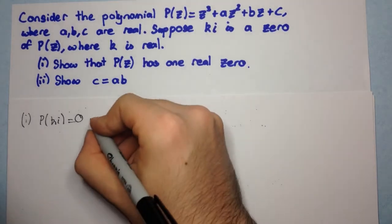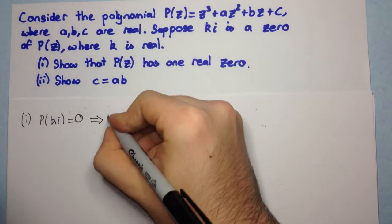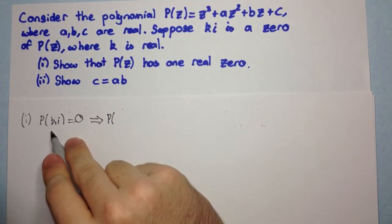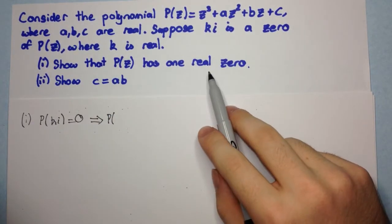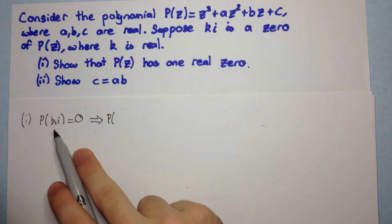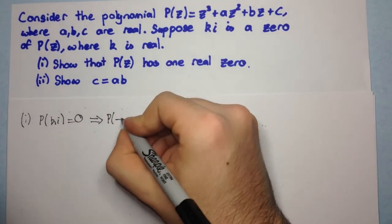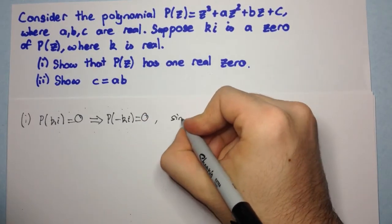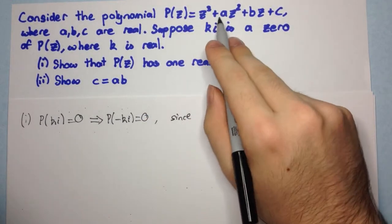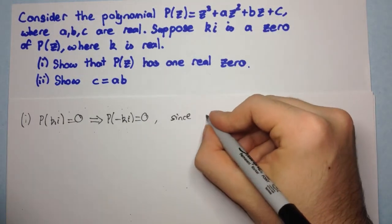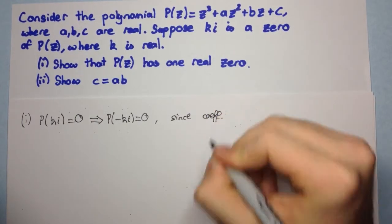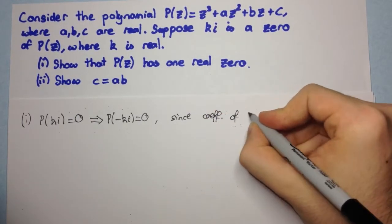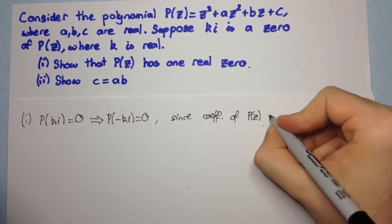So, since K is real, this is a purely imaginary number. And now we can use the conjugate root theorem to say that P of minus Ki is equal to zero. Since all these coefficients, 1, A, B, and C are real. Since the coefficients of P of Z are real.